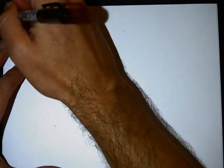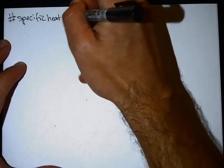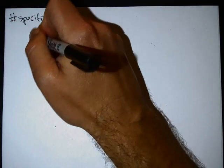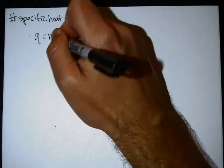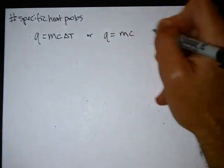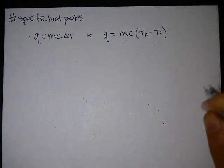Okay, specific heat problems. There are three. The equation looks like this: Q equals M times C times delta T, or if you'd rather, Q equals M times C times temperature final minus temperature initial.